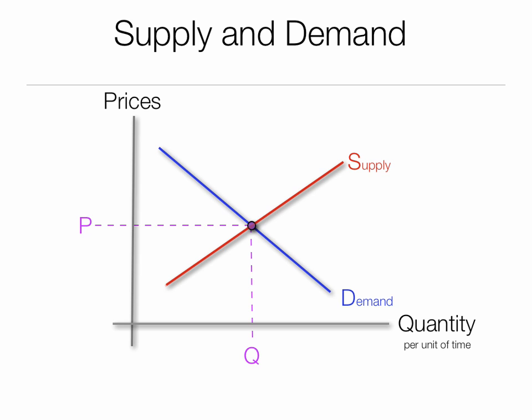In this short video I'm going to talk about price ceilings and price floors. We've been talking about the supply and demand model — supply is in red, demand is in blue, equilibrium price is in purple. A price ceiling is a government-imposed, or maybe even a company-imposed, price below what we would consider the market price.